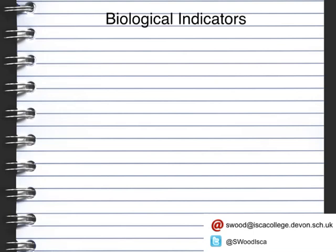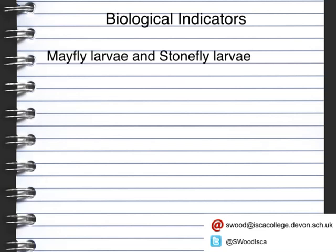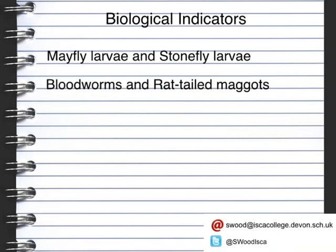Biological indicators are a more reliable way of looking for polluted water. Biological organisms are sensitive to specific types of environments, so you might get an idea about whether the water is polluted or has high oxygen levels by the type and number of different organisms within a particular area. For example, mayfly larvae and stonefly larvae are very sensitive to changes in oxygen levels, so they can only live where there is a high level of oxygen — oxygenated water — whereas bloodworms and rat-tail maggots can survive in polluted areas where there is deoxygenated water.